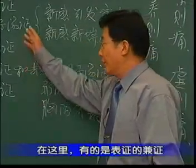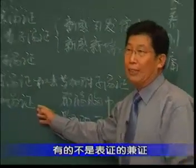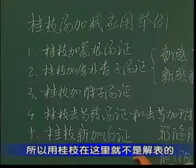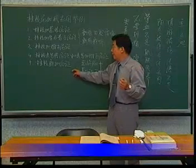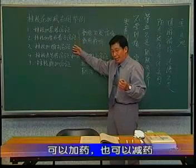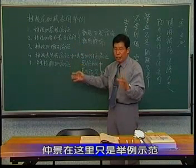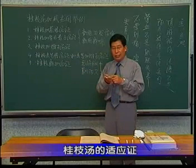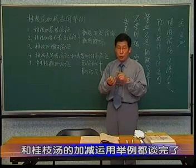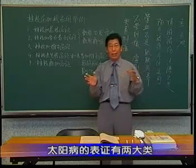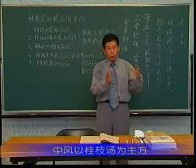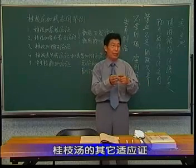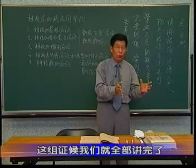这样的话，我们把桂枝汤的加减方的例子就都谈完了。那么在这里，有的是表证的兼证，有的不是表证的兼证，你比方说新加汤证，它就不是表证，它是营气不足、基肤失养，没有表邪，所以用桂枝在这里就不是解表的。可见桂枝汤在临床应用的时候可以加药、也可以减药，仲景在这里只是举例示范，来提示桂枝汤临床上可以灵活加减、灵活应用。我们把桂枝汤的适应证、桂枝汤的使用禁忌证和桂枝汤的加减应用举例就都谈完了。